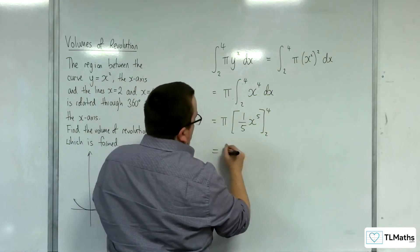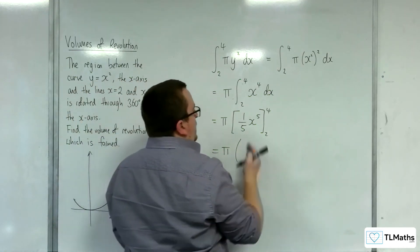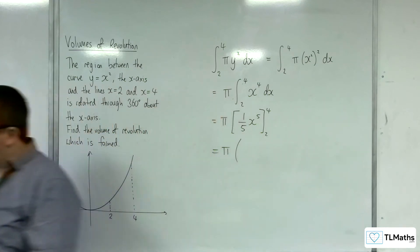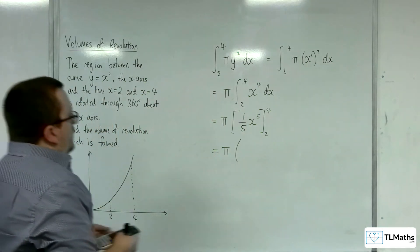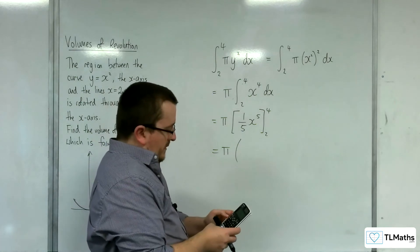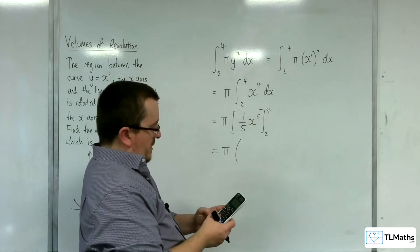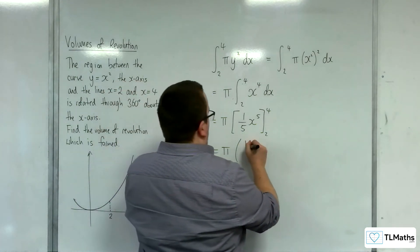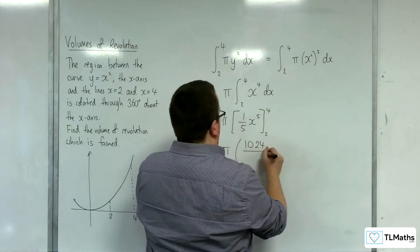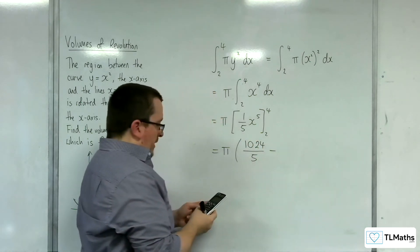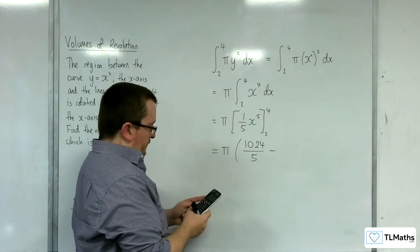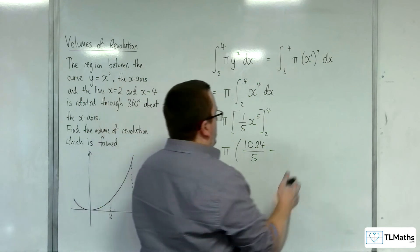So we have pi times, now we're going to substitute in the 4 first. So 1 fifth times 4 to the power of 5 is 1,024 over 5. And then we're going to substitute in the 2. We get 32 over 5.